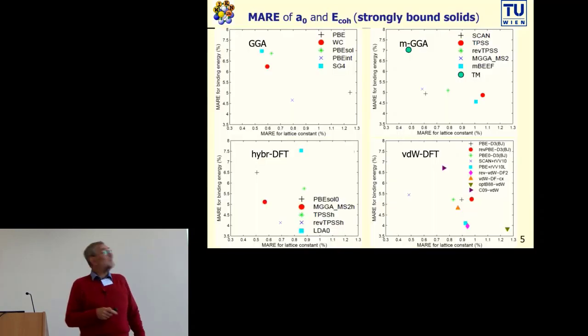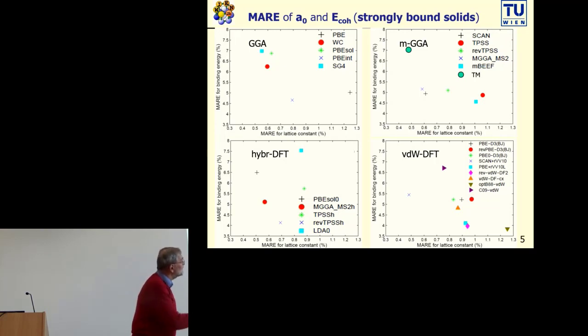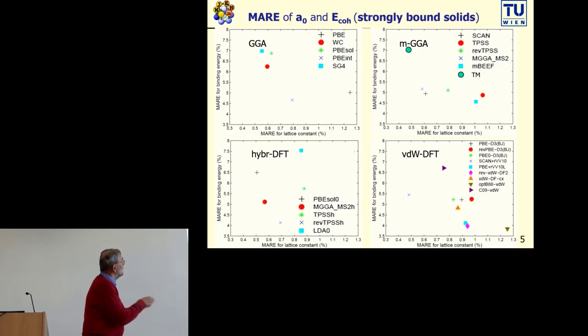So what are the results? When we focus on the mean absolute relative error for lattice parameters or for binding energy for GGAs, meta-GGAs, hybrids, or Van der Waals functionals, then you can see that on average the best functionals in each group can reach an average accuracy of half a percent in the lattice parameter, and that is true for all classes of functionals, and also of four or five percent for the binding or cohesive energy.